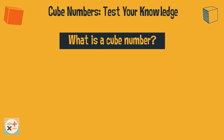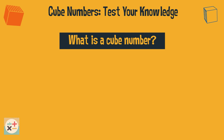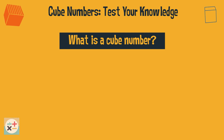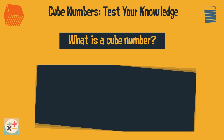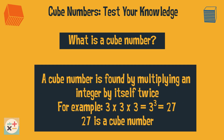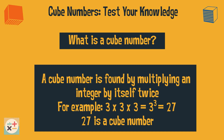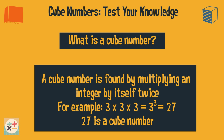Question 1. What is a cube number? You may want to pause the video while you think of your answer. A cube number is found by multiplying an integer by itself twice. For example, 3 times 3 times 3 equals 27, so 27 is a cube number.